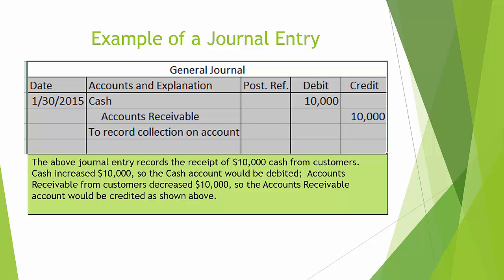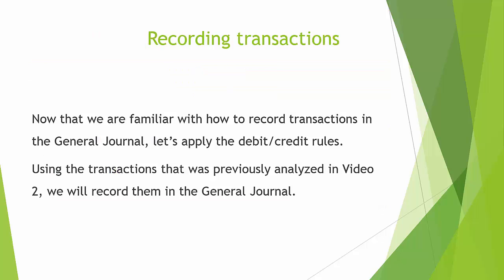Here's an example of a journal entry. The above journal entry records the receipt of $10,000 cash from customers. Cash increased $10,000, so the cash account would be debited. Accounts receivable from customers decreased $10,000, so the accounts receivable account would be credited as shown above. Now that we are familiar with how to record transactions in the general journal, let's apply the debit credit rules.